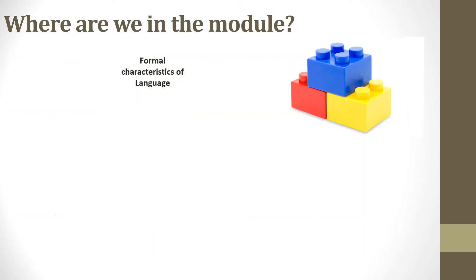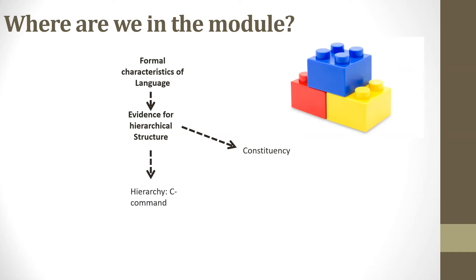We started out by looking at some of the evidence for hierarchical structure, and after having recapped a bit of Linguistics One, we looked at constituency and then started looking in more detail at a particular relationship between constituents, namely C-command. We first looked at polarity items to introduce the notion of C-command, and in this lecture we will be looking at agreement.